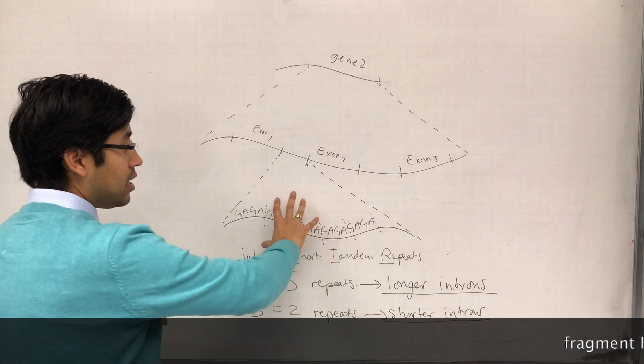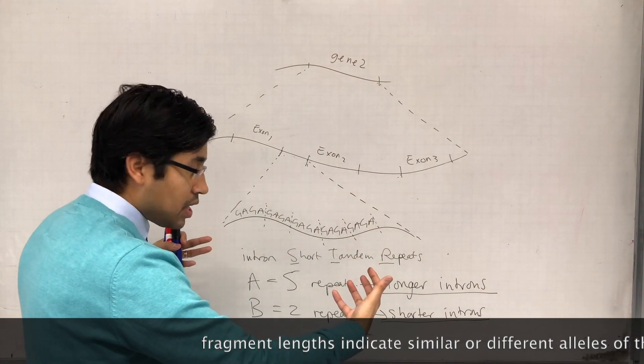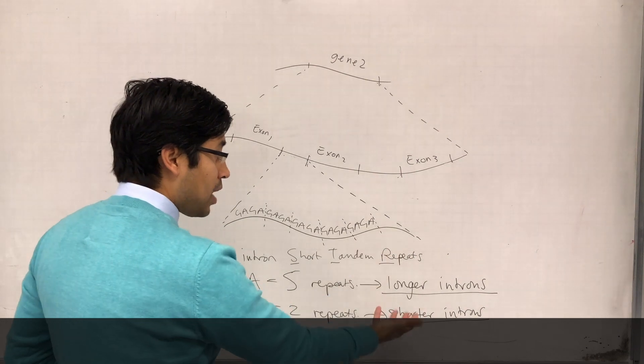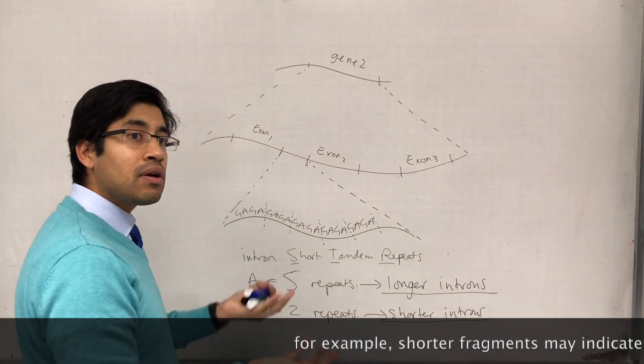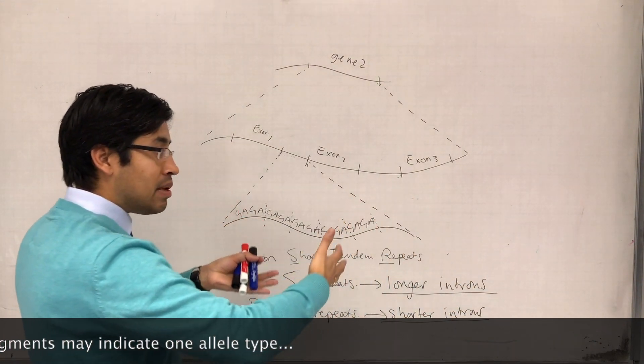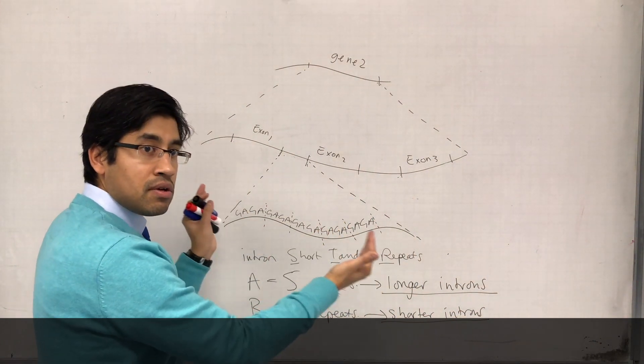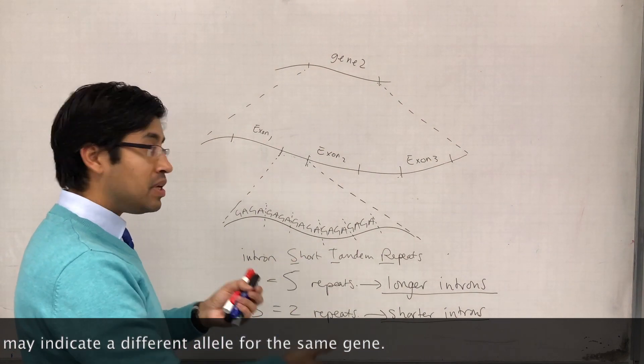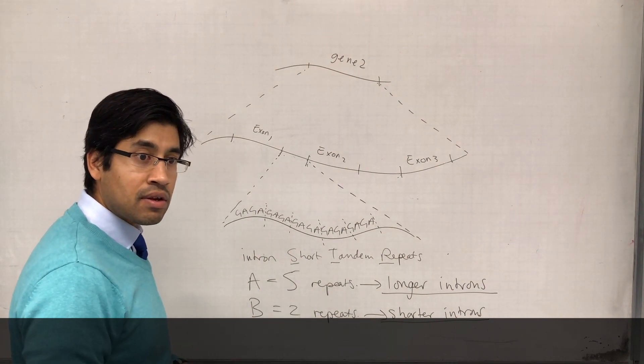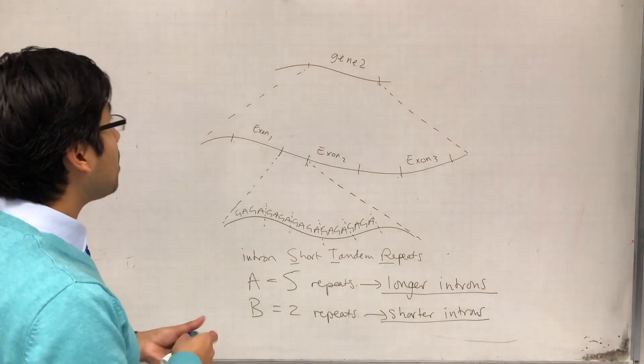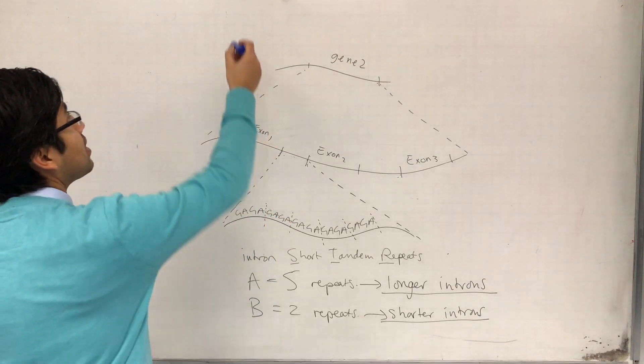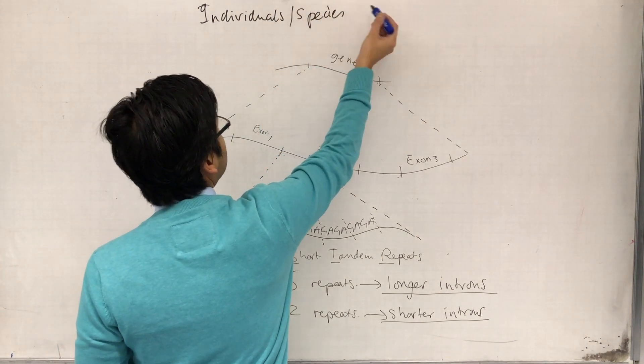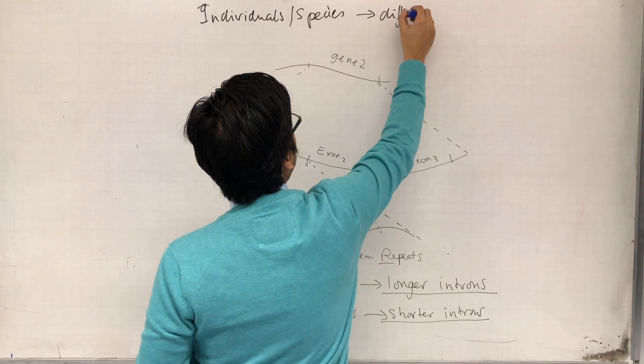In that way we can tell how similar they are. If the introns happen to be similar lengths then we assume that they are closely related. If the introns are very different lengths then we assume that these two species or individuals are distantly related. The take-home message is that individuals or different species will have differences in STR, the number of STR repeats.